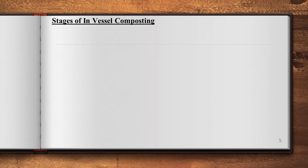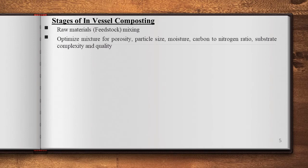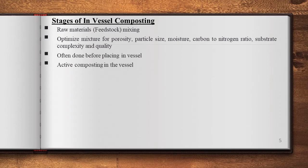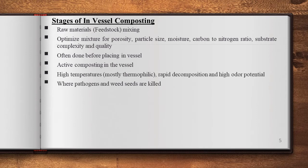Stages of in-vessel composting: First, raw materials are mixed. Next, the mixture is optimized for porosity, particle size, moisture, carbon to nitrogen ratio, substrate complexity and quality. This is often done before placing material in-vessel. After that, active decomposition occurs in-vessel at high temperature, causing rapid decomposition and high odor potential. Pathogens and weed seeds are killed.